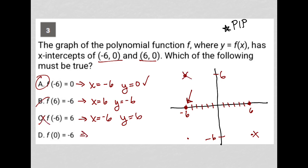And d would say that when x is 0, y is negative 6, which would put us right here on the y-intercept. That would be our y-intercept, which is also not true.